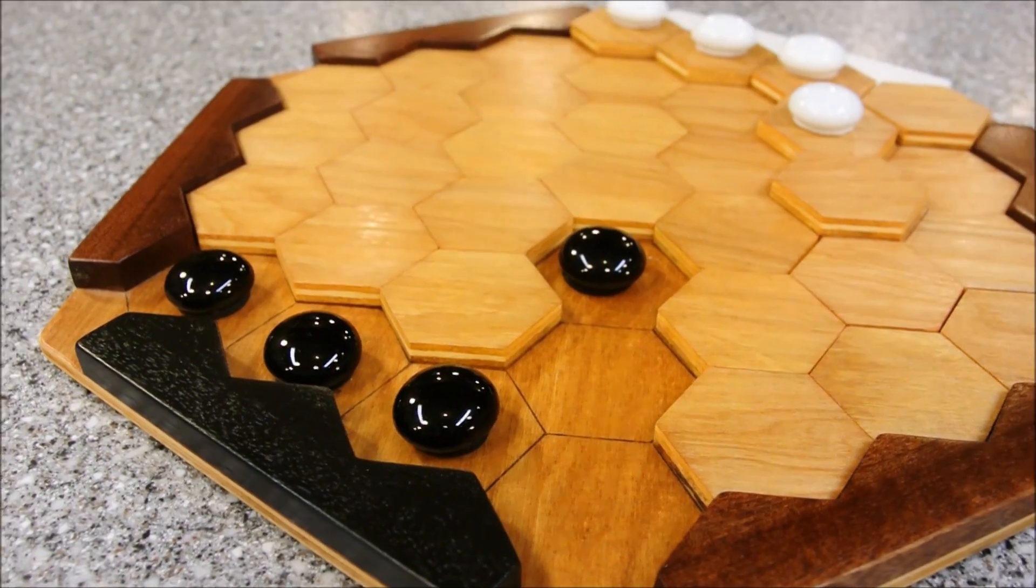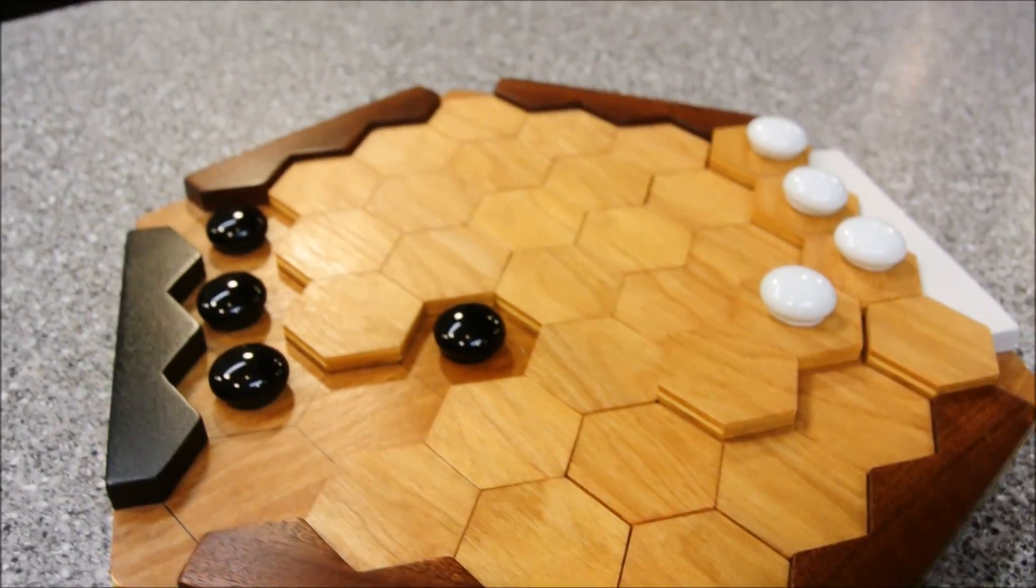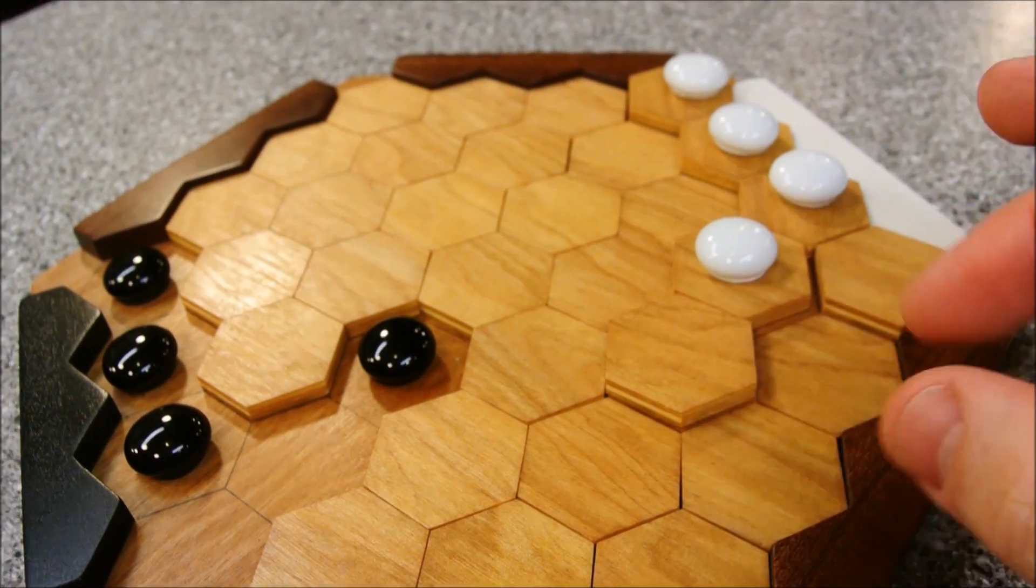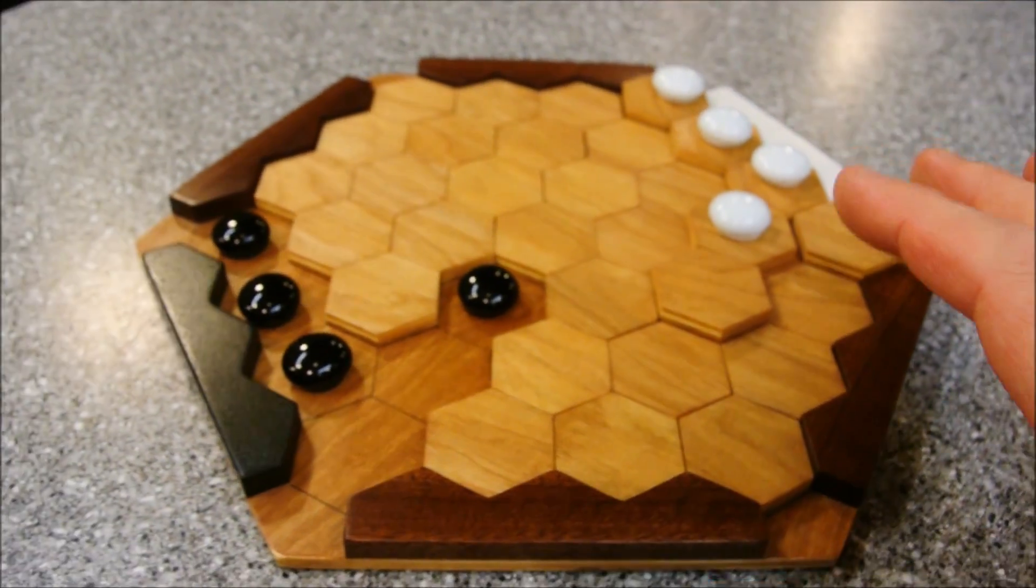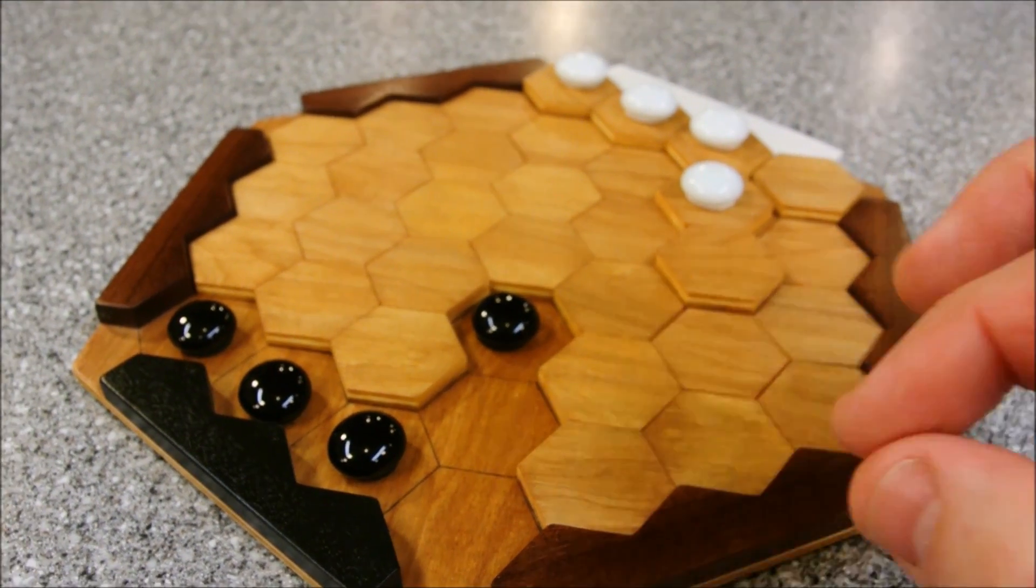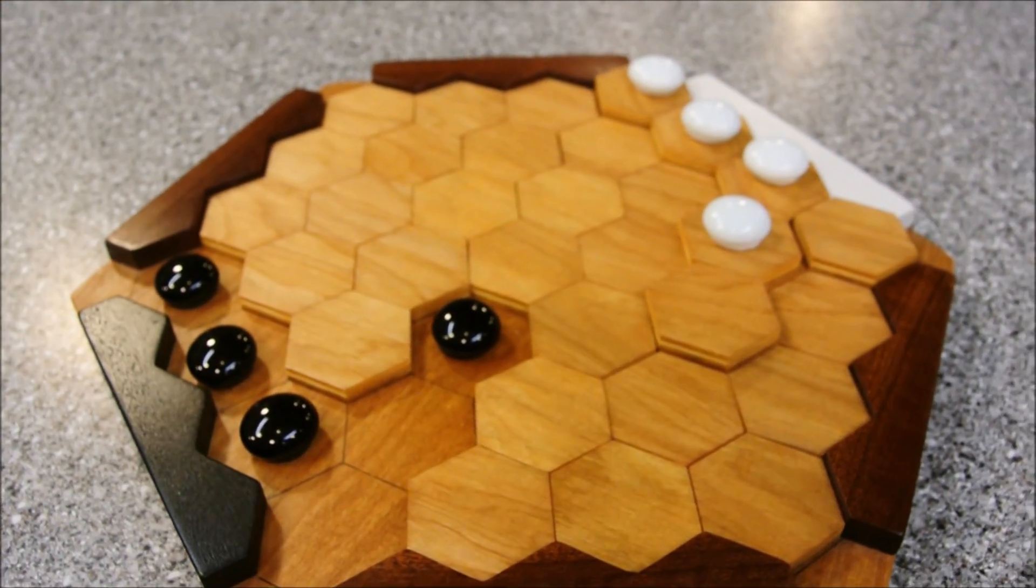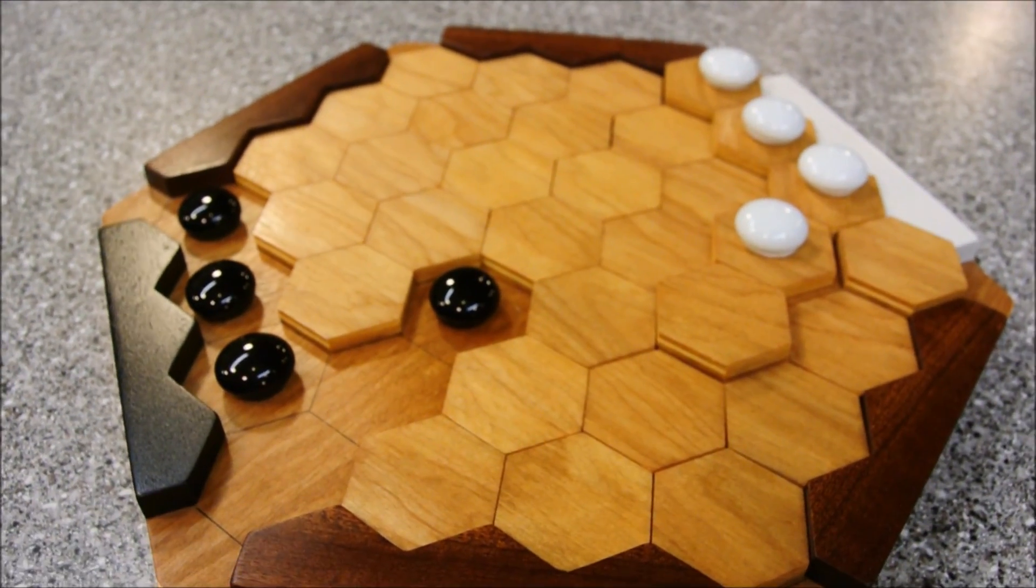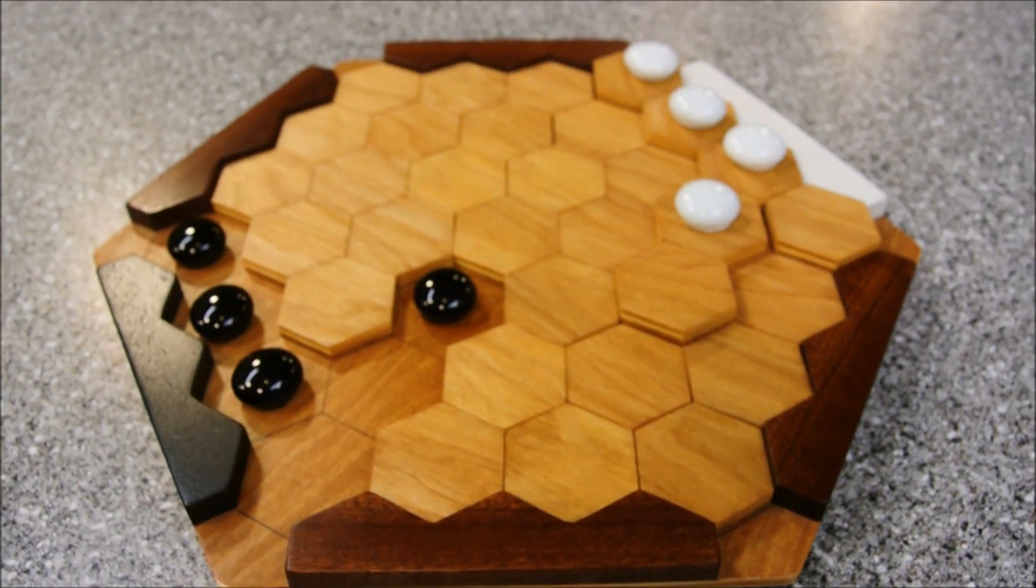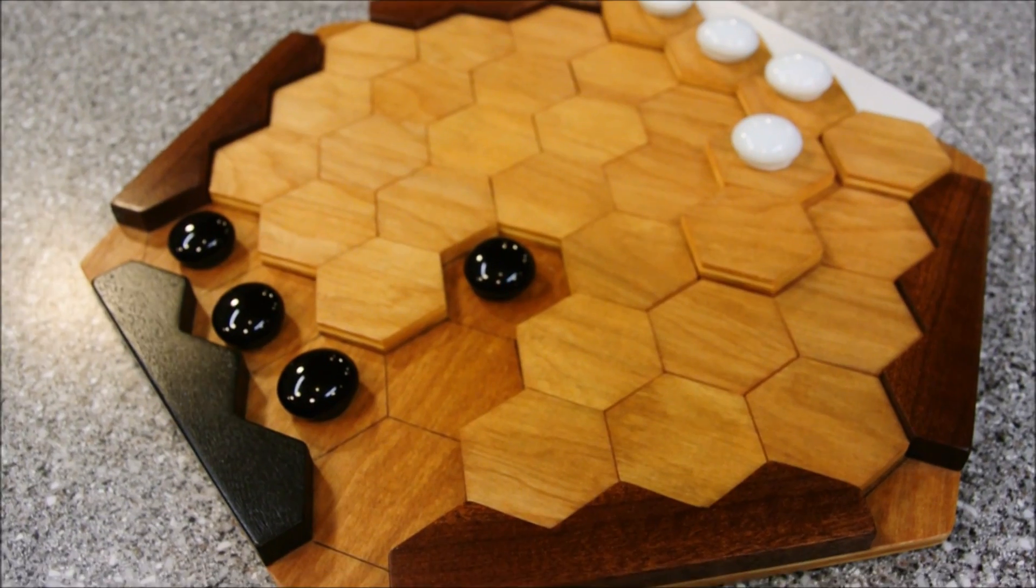So a frequent criticism that I was receiving from the last video was that the tiles move too easily, and it's frustrating to place them. And a lot of people suggested locking mechanisms, magnets, pieces with male and female ends. I didn't like most of those ideas because they were either difficult to implement or they distracted from the gameplay visually.